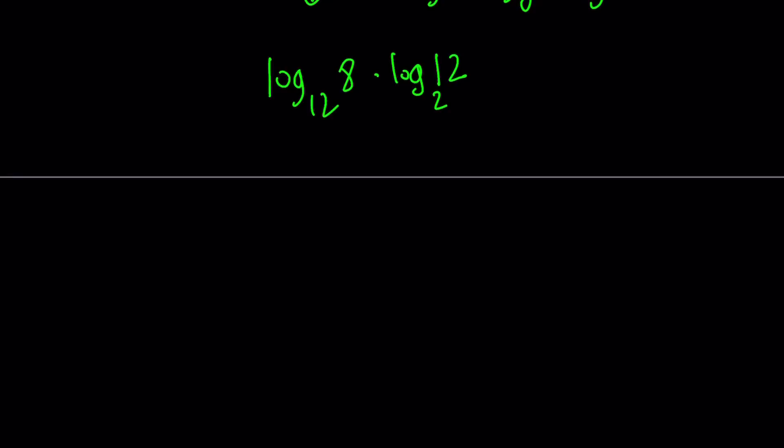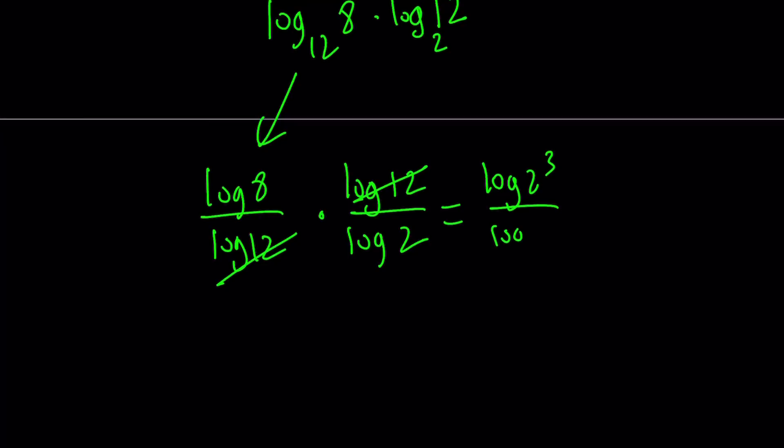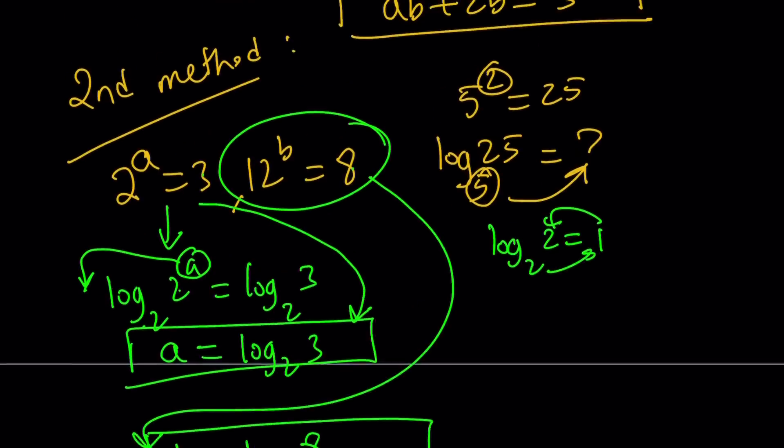So let's go ahead and use change of base. This can be written as log 8 over log 12 by change of base to base 10. The second one is log 12 over log 2. Log 12 cancels out. And log 8 can be written as log 2 to the third power. And then the 3 can be moved. This gives us 3 log 2 over log 2. And the log 2 cancels out. And we end up with 3. And remember, 3 is the answer.